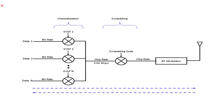This slide gives a brief overview of how the scrambling process is carried out. The different data are transmitted with different bit rates. There will be channelization, followed by multiplexing, after which the scrambling process is carried out, generating a scrambling code. Based on the chip rate, it is transmitted to the RF modulator and then transmitted over the air.